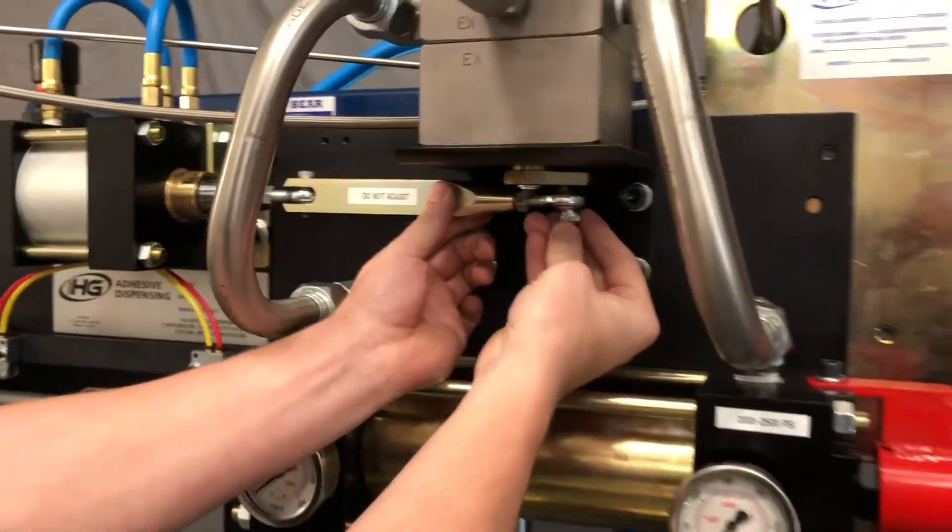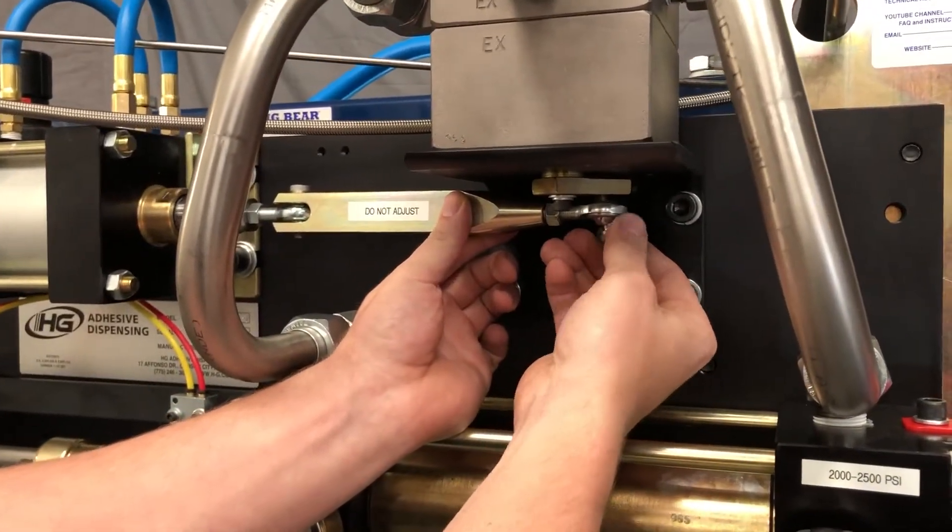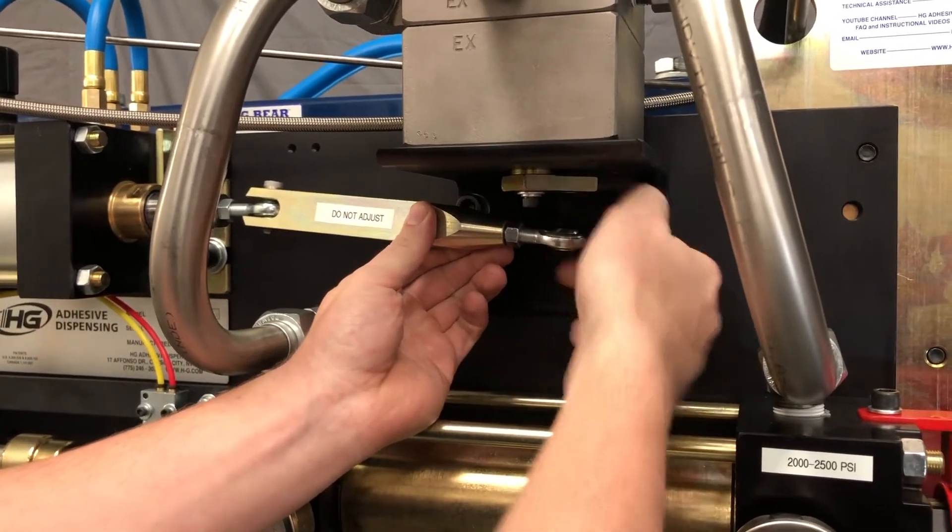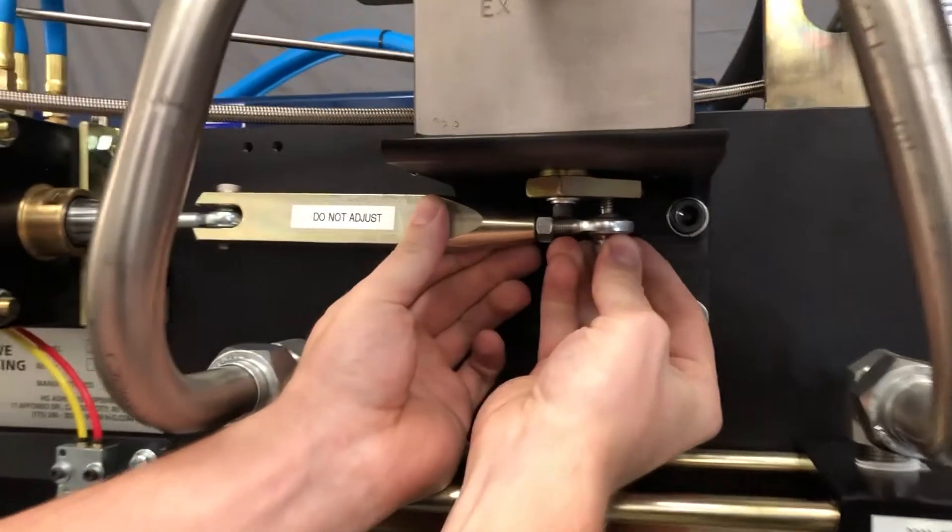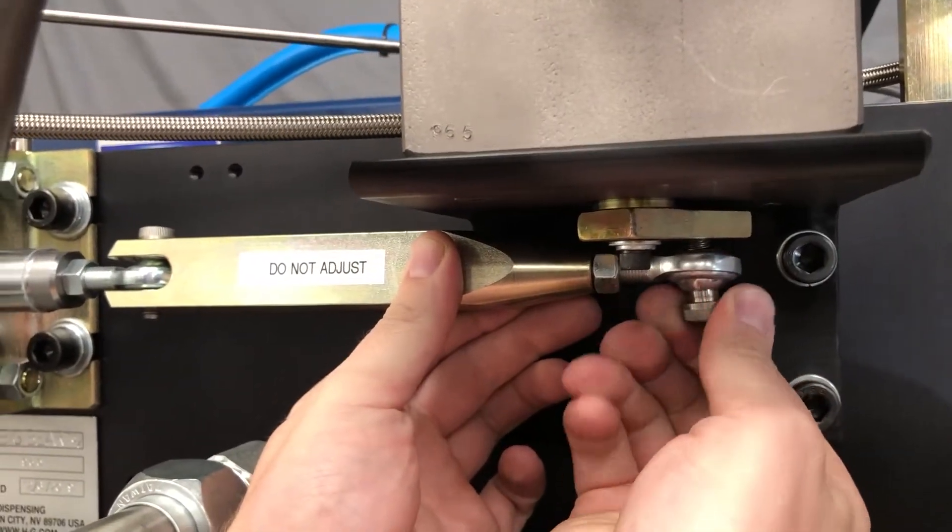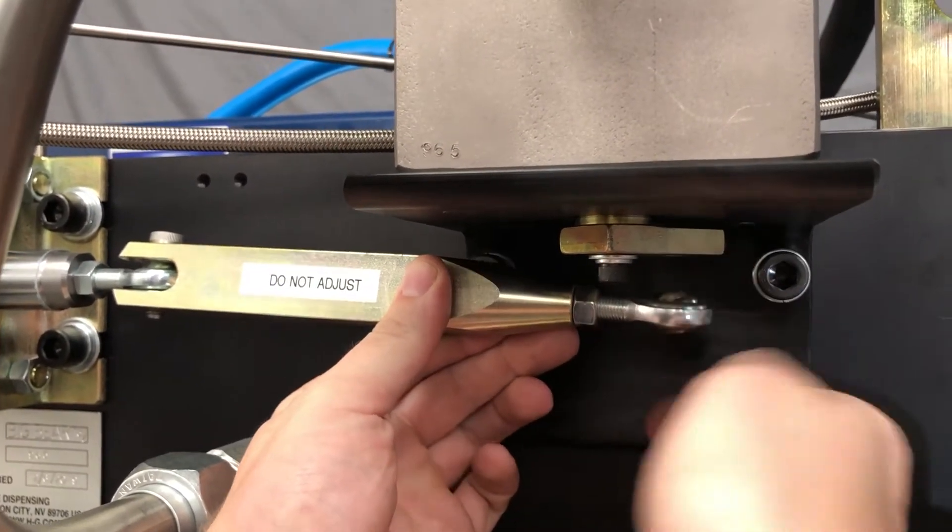So like I said, it's coming in here at an angle. So I can adjust my eye bolt, give it a couple turns, and see if I can get it. It's getting really close. I'll give it another half turn.